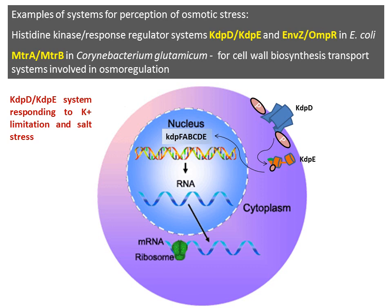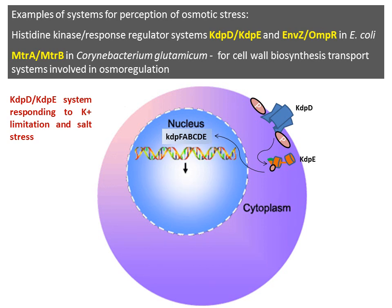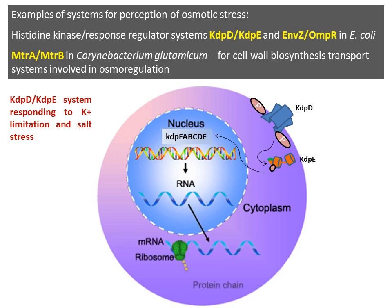Some well-known systems for perception of osmotic stress in bacteria include the KdpD/KdpE system present in response to osmotic changes, the EnvZ/OmpR system — both present in E. coli — and MtrA/MtrB present in Corynebacterium glutamicum, which is involved in biosynthesis transport and osmoregulation.